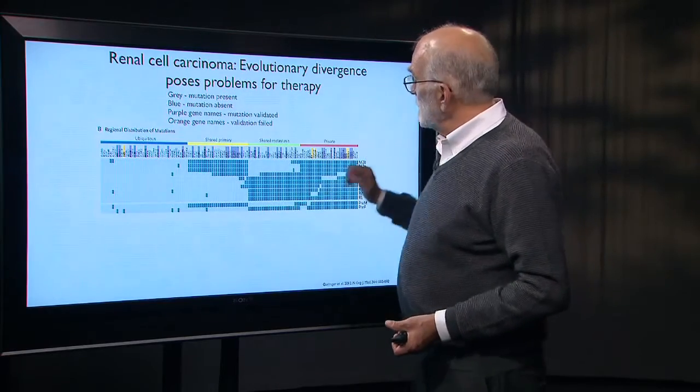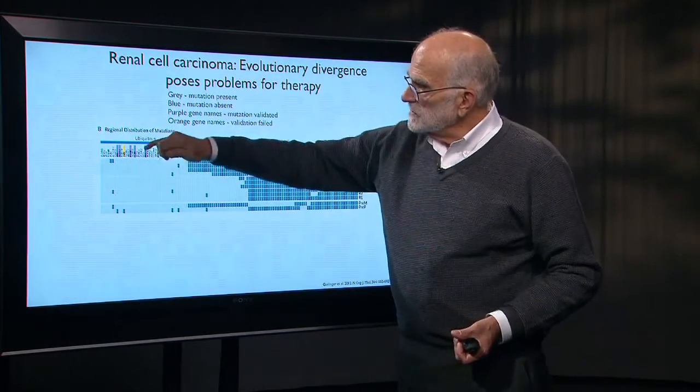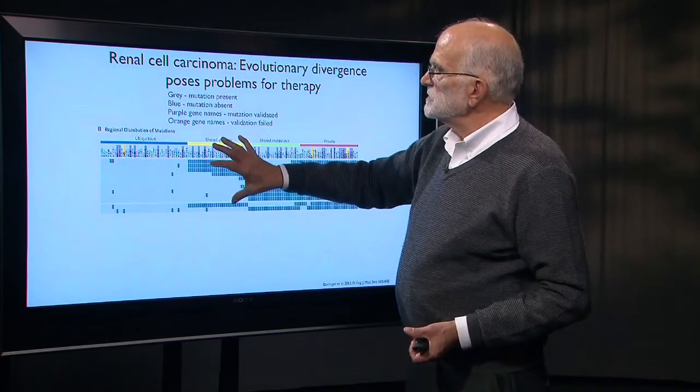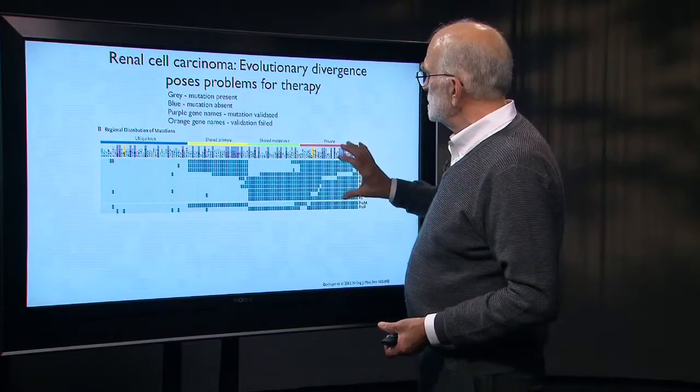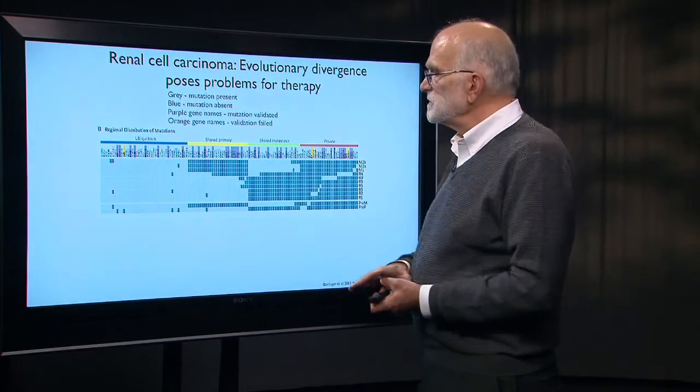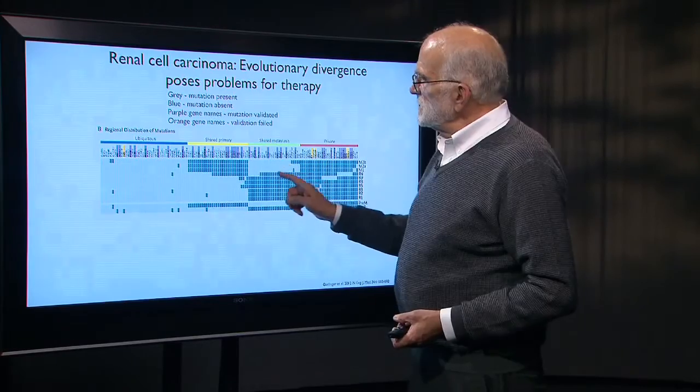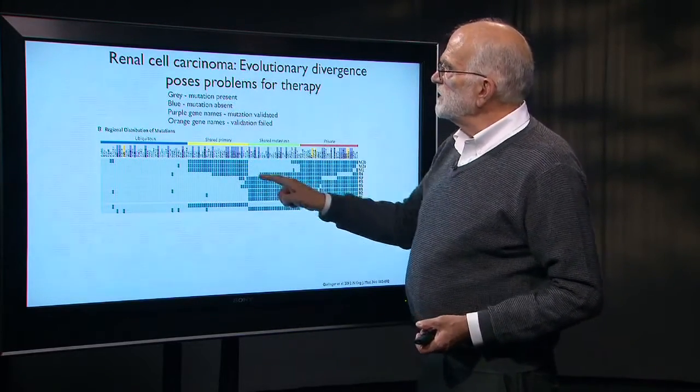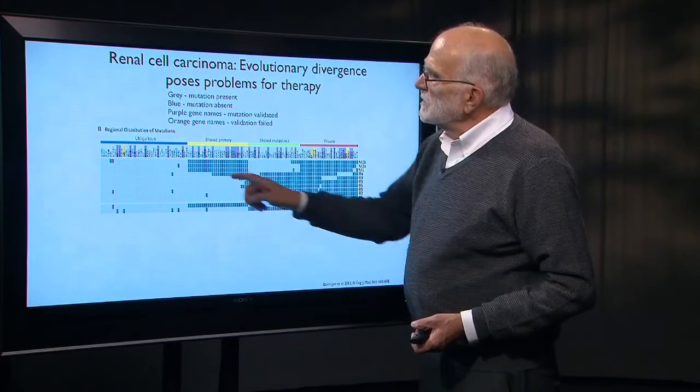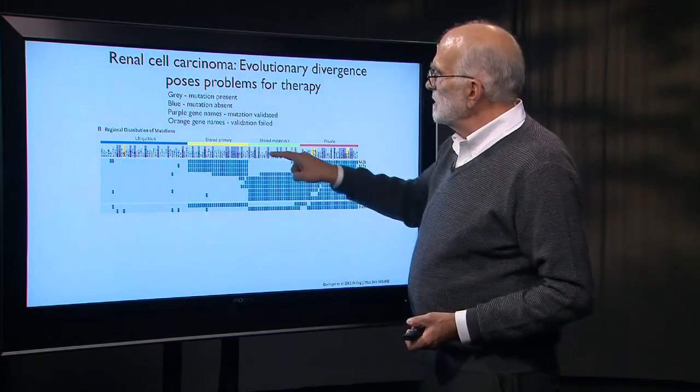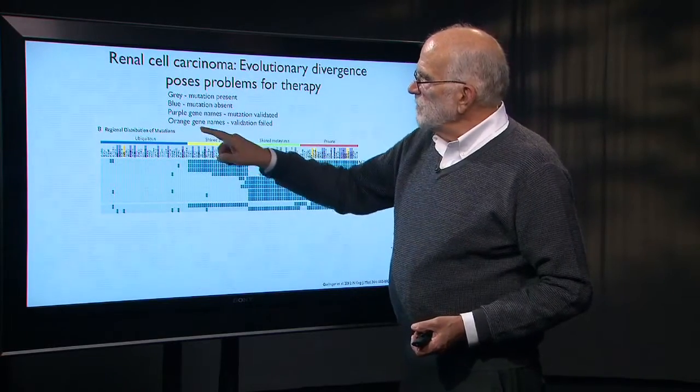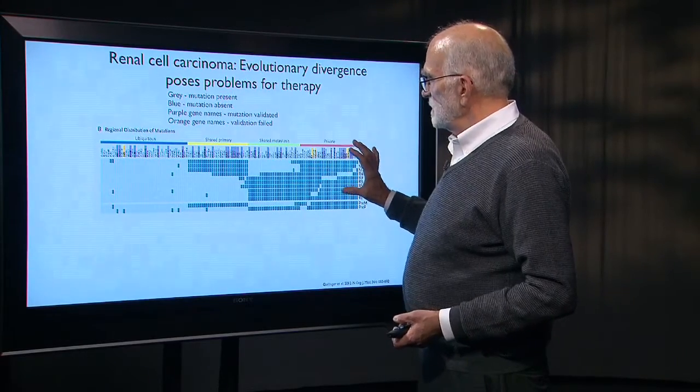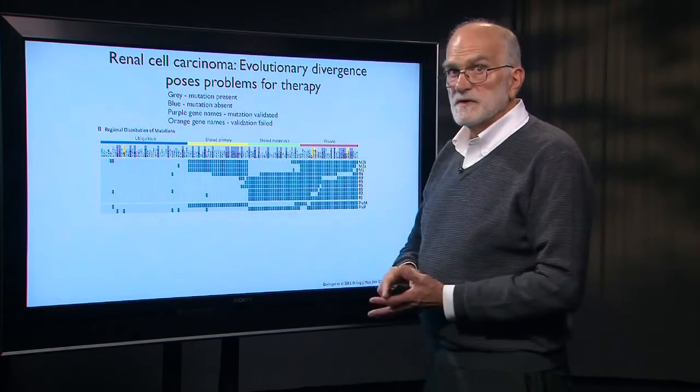And you look at the genes that are ubiquitous—so they're in all the cells—or they're just in the primary tumor, or they're shared by the metastases, or they're private to single little branches in the metastases. Basically what you see here is gray indicates that the mutation is present. Blue indicates that mutation is absent. The purple gene names here shows that they validated it, and the orange gene names in a few little cases show that they failed to validate the gene, so that's showing the reliability of the information.